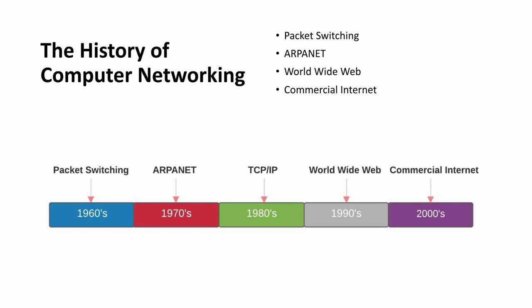The first one we'll talk about is packet switching, which was developed in the 1960s. Then we'll talk about ARPANET, which was really some of the early foundations for the internet in the 1970s. Then we'll talk about TCP/IP, the underlying protocol which runs the internet today, developed in the 1980s. Followed by the World Wide Web, which was developed in the 1990s, and the advent of the internet as we know it today in the 2000s.